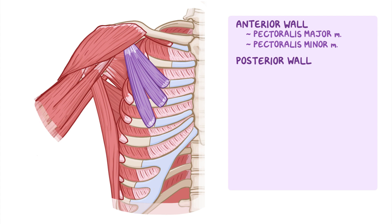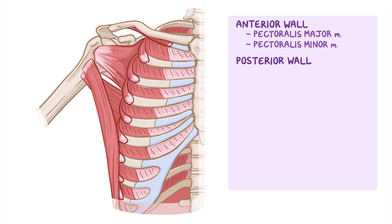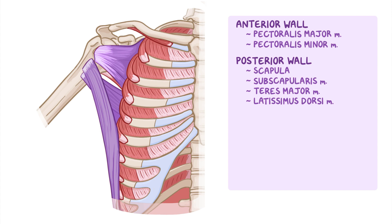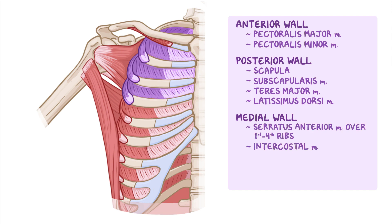The posterior wall of the axilla is formed mainly by the scapula and overlying subscapularis muscle. The inferior aspect of the posterior wall is formed by the teres major and latissimus dorsi muscles, inferiorly forming the posterior axillary fold. The medial wall is formed by the serratus anterior muscle overlying the first to fourth ribs and intercostal muscles. Finally, the lateral wall is a bony wall formed by the intertubercular sulcus of the humerus.